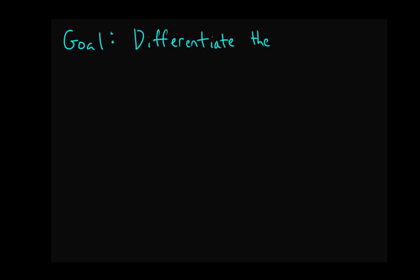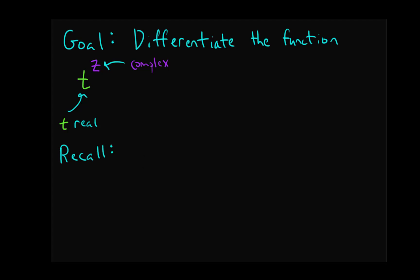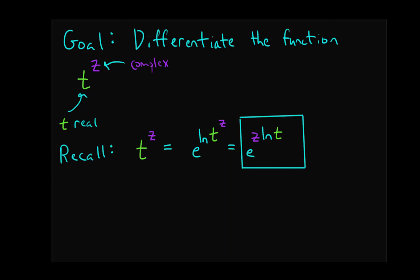First, we're going to differentiate the function t^z, where t is a real variable and z is a complex variable. To do this, we want to write t^z in a different form covered in an earlier video on complex exponentiation. Recall that t^z can be written as e^(log t)^z, and using the rules of exponentiation we bring z down to get t^z = e^(z log t). That's our starting point for taking the derivative.